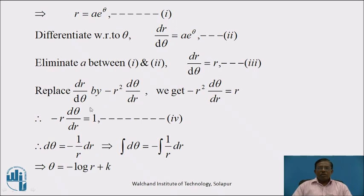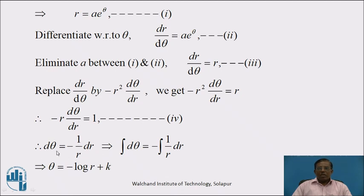Now, in equation 3, we replace dr/dθ by -r² dθ/dr. We get -r² dθ/dr = r. One r gets cancelled from both sides, giving -r dθ/dr = 1. Denote this equation by 4. Now we solve equation 4 by separating the variables. We can write it as dθ = -(1/r) dr. This is in variable separable form. Integrating both sides: ∫dθ = -∫(1/r) dr, which gives θ = -log r + k, where k is a constant. This is the family of curves which is orthogonal to the given family of curves.